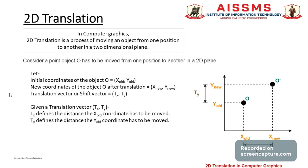What is translation? In computer graphics, translation is the process of moving an object from one position to another in a two-dimensional plane. Another definition: translation is the process of changing the position of an object in a straight-line path from one coordinate to another location.